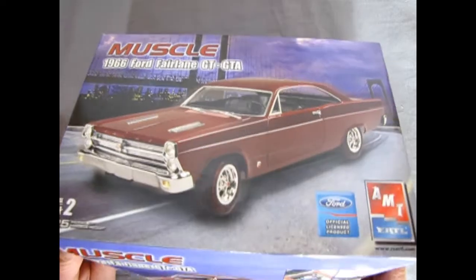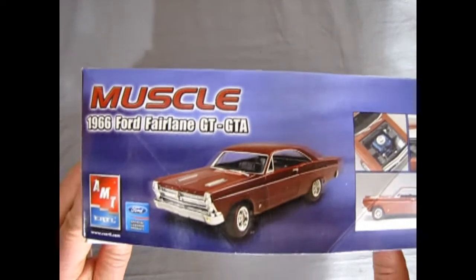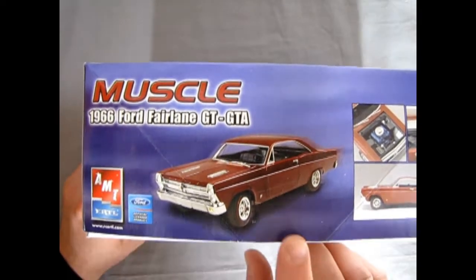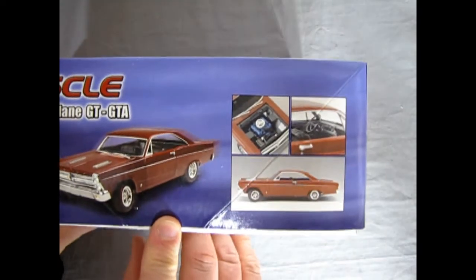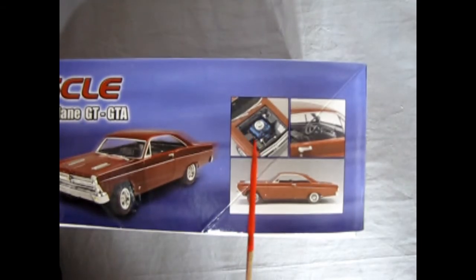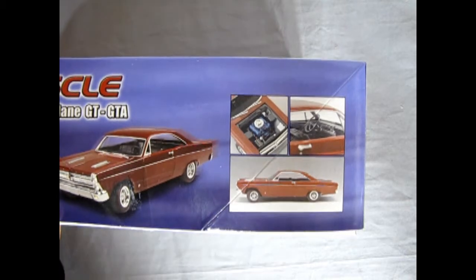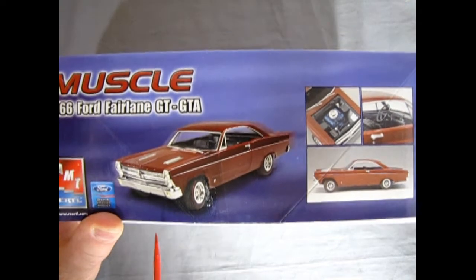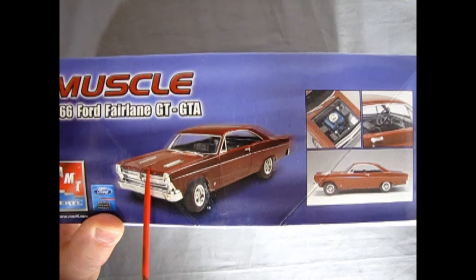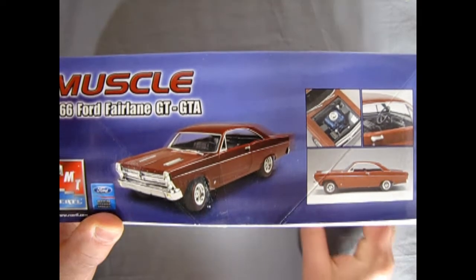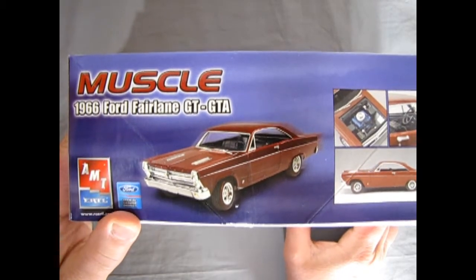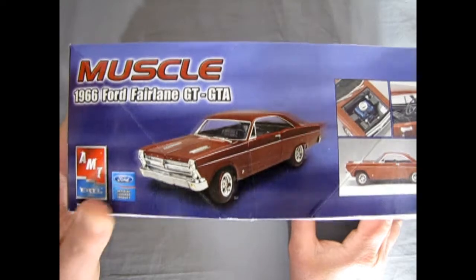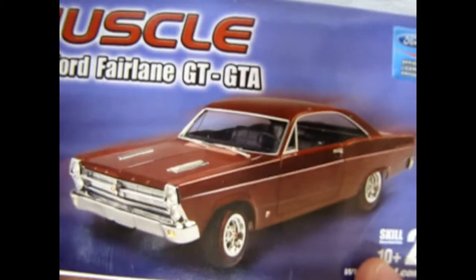Now of course this box has the typical RC2 type of artwork on the side which is just basically a photograph of the model itself. Very kind of blah. Now it's hard to tell here but this is the 390 cubic inch engine. AMT I believe they also had the Ford Fairlane 427 with the hood scoop but I never got that kit and I believe it was quite a limited edition. Under Round 2 we may actually see that kit come out again if of course we haven't already.